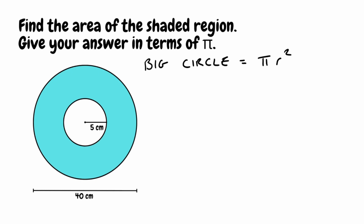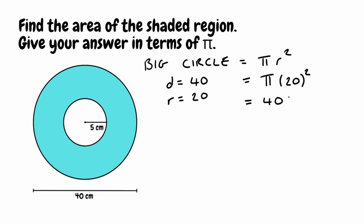We need the radius of that big circle. We can see in the question we've been given the diameter — the diameter is 40 centimetres. If we know the diameter is 40 we can figure out the radius by simply halving this number, so the radius is going to be 20. Substituting back into the formula: pi times 20 squared. Well 20 squared is 400, so leaving this in terms of pi that would simply be 400 pi.